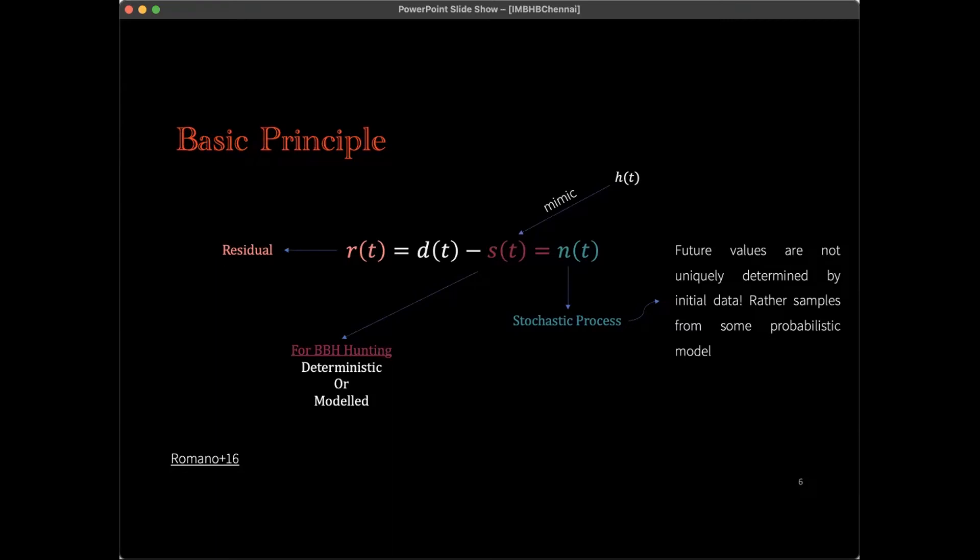Now, as the name suggests, the noise is a random process, meaning that future values of it are not uniquely determined by its current value, but are rather samples from some underlying probability distribution. Also, a gravitational wave detector has contributions from a myriad of noise sources, each characterized by its own probability distribution, and hence the resultant noise process is expected to be extremely complicated.